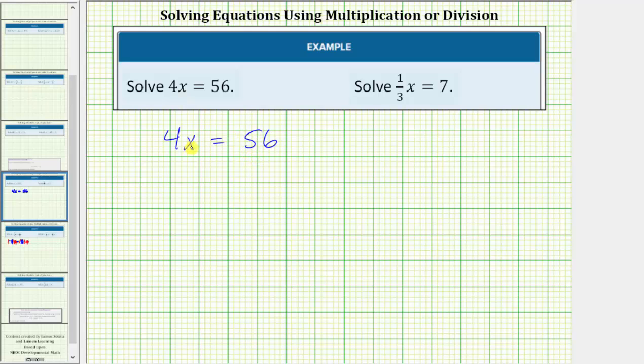Notice right now we have 4x on the left side and 4x means 4 times x. Therefore, in order to isolate x and solve the equation, we need to undo this multiplication by performing the opposite or inverse operation.